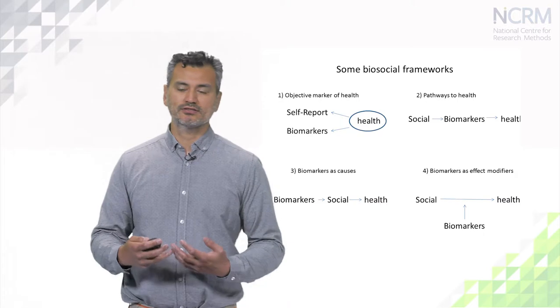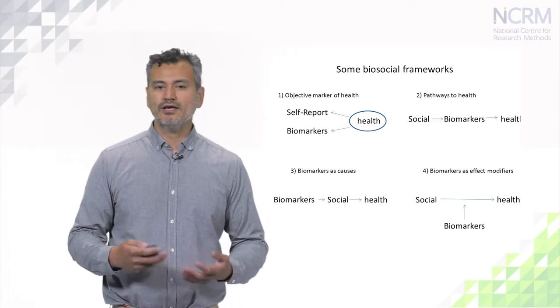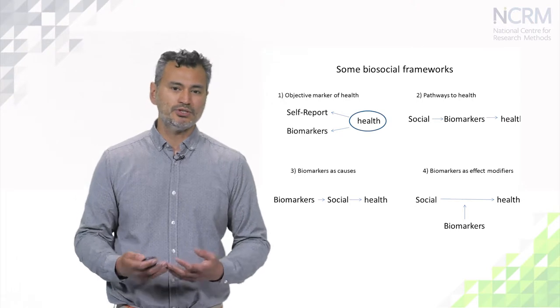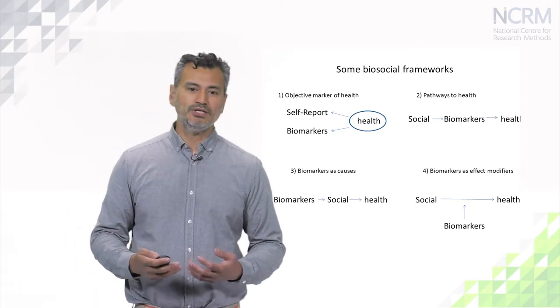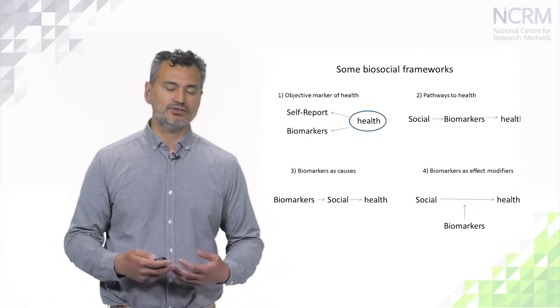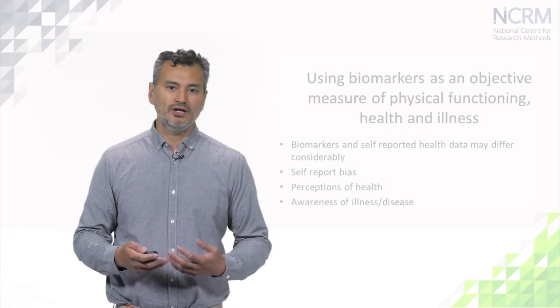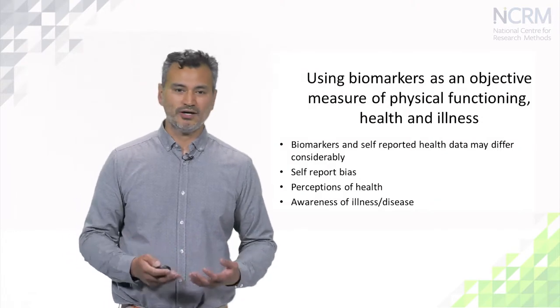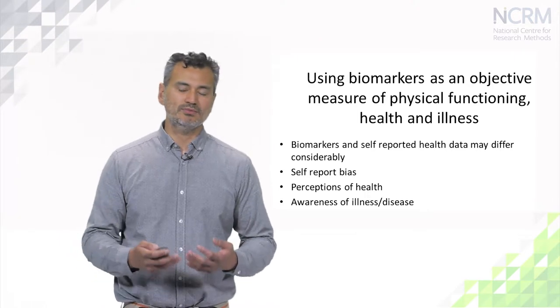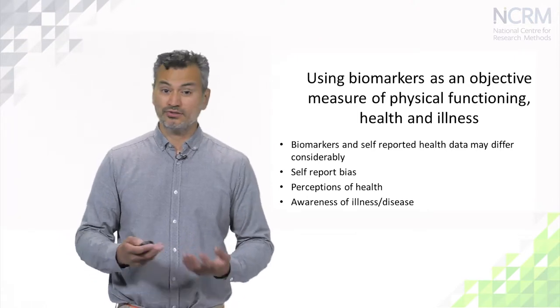Biomarkers have often been used as a better, more objective measure of health, because self-reported health collected in standard surveys often has a lot of bias. It depends on people's own perceptions of their health, so it's very subjective. It depends on people being aware that they have particular disease or illness conditions. A self-report of health might be considerably affected by a person's mood on the day they were sampled, whereas a biomarker based on a clinical objective measure may seem to be free from such biases. But there are advantages and disadvantages for using biomarkers in place of self-rated health.